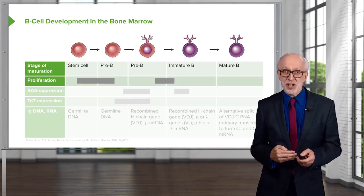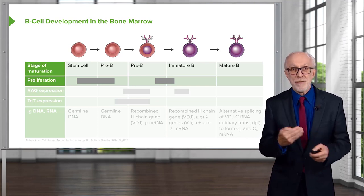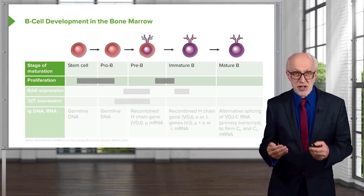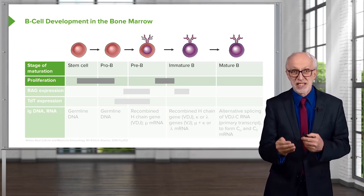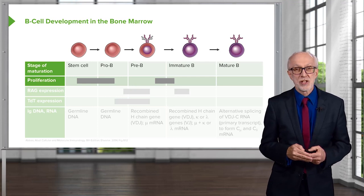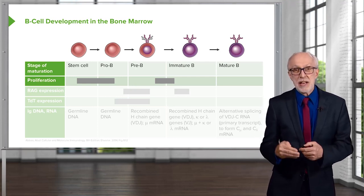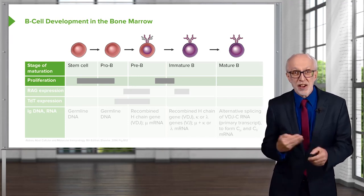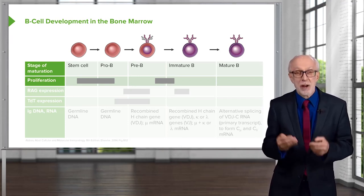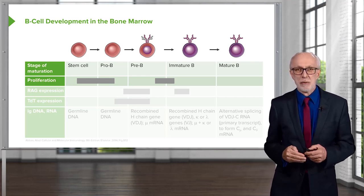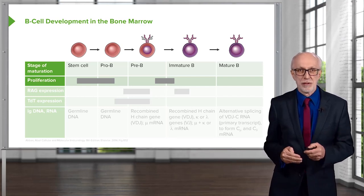There are two stages in this development process where B cells undergo very extensive cell division — in other words, proliferation. That's at a very early stage in their maturation, at the stem cell to pro-B cell stage, and then later on at the pre-B to immature B cell stage, they undergo further massive rounds of proliferation.